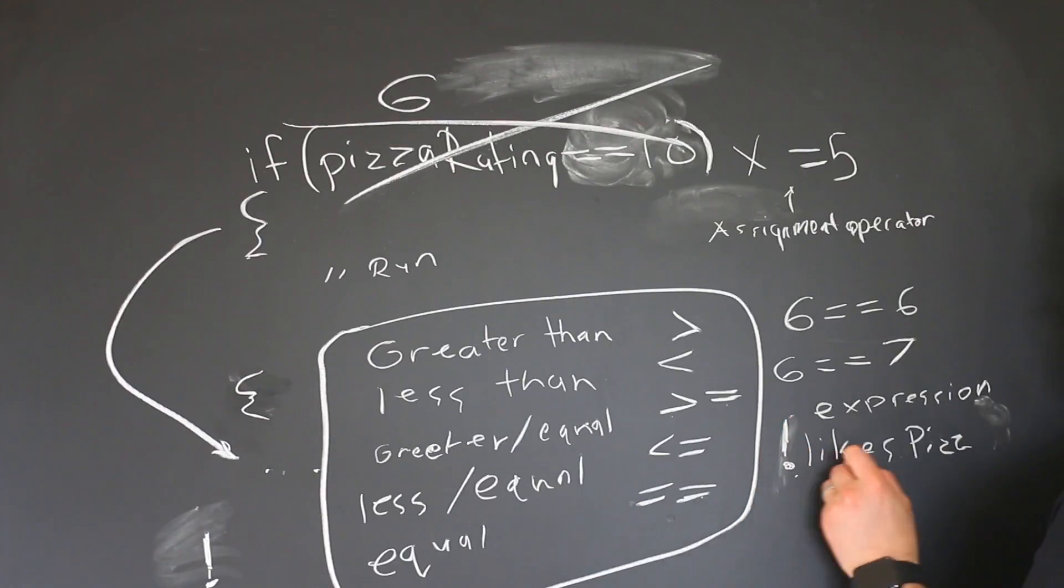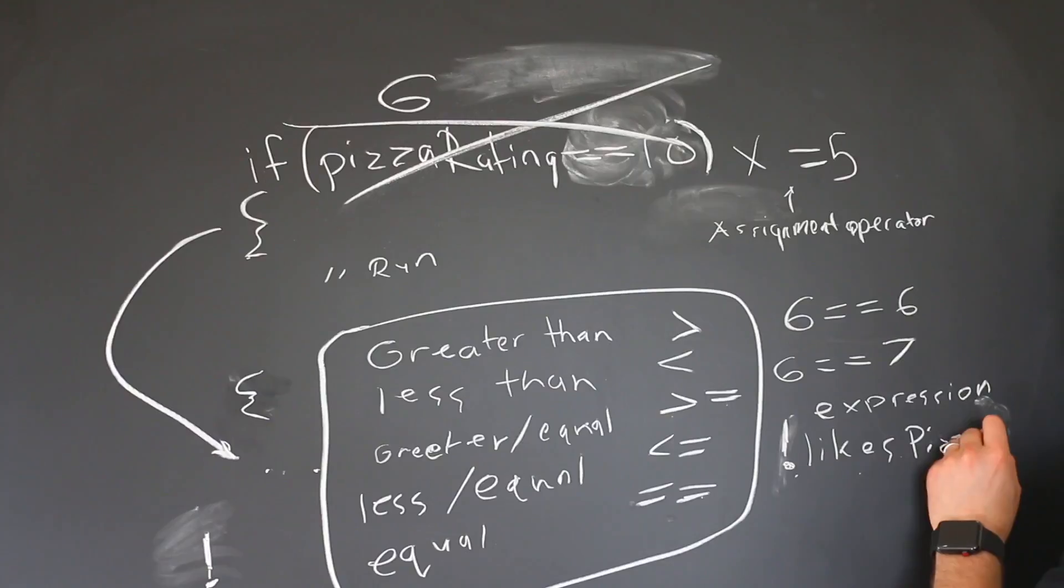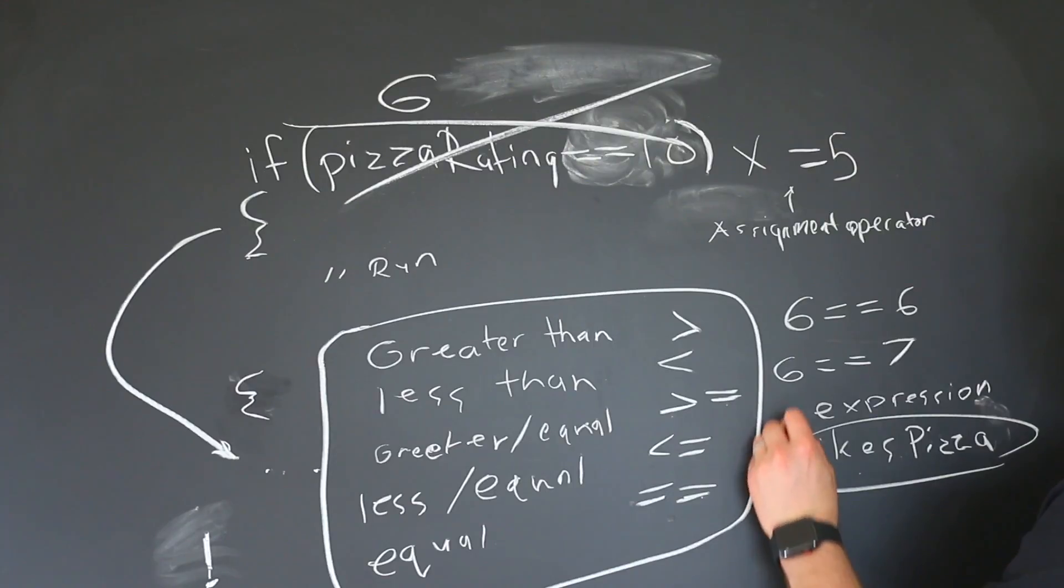Well, you could put that exclamation mark there, which means does not like pizza. So it basically flips the value. So if likesPizza is actually true, when we put this exclamation mark it would have to be false. It gets a little confusing, so don't worry too much about it.